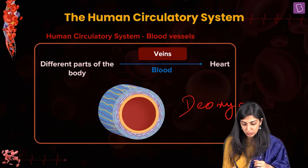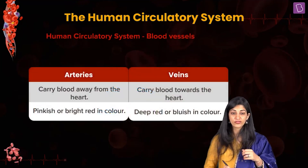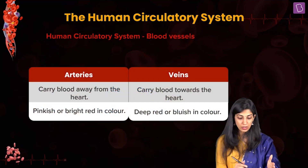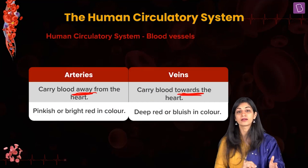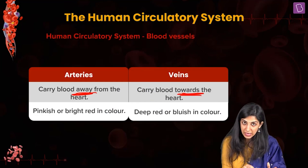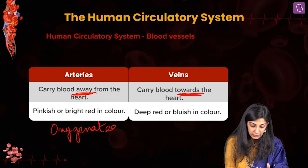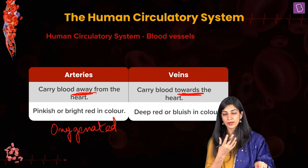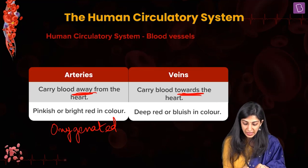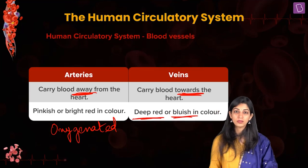To summarize: arteries carry blood away from the heart, veins carry blood towards the heart. Since arteries carry oxygenated blood, it is bright red — a bright pinkish red. The veins have bluish or deep red blood, which is deoxygenated.